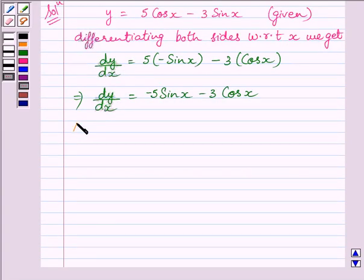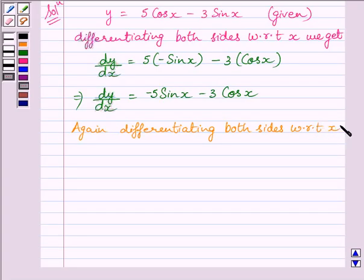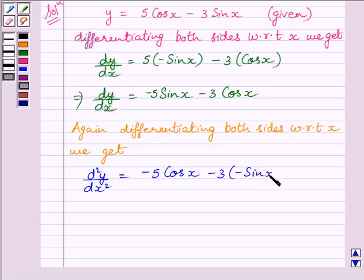Now, again differentiating both sides with respect to x, we get d square y upon dx square is equal to minus 5 cos x minus 3 multiplied by minus sin x, or it is equal to minus 5 cos x plus 3 sin x.